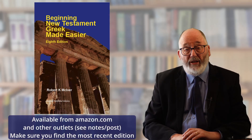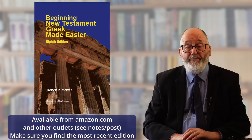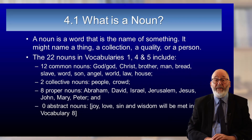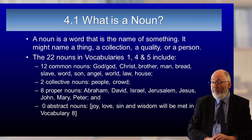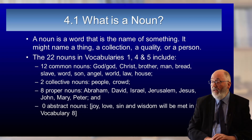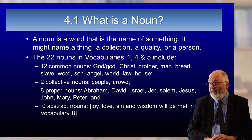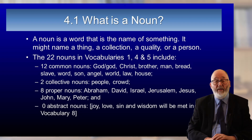The noun is introduced in chapters four and five of my book, Beginning New Testament Greek Made Easier. If I look at the vocabulary lists in chapters one, four, and five, I find twenty-two nouns. Twelve of them are common nouns: God (with a capital G and a small g), Christ, brother, man, bread, slave, word, son, angel, world, law, house. There are two collective nouns: people and crowd.